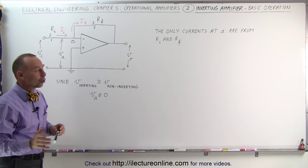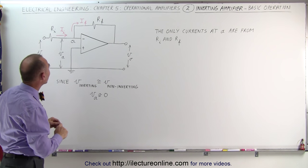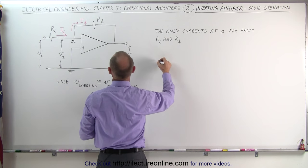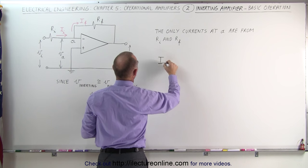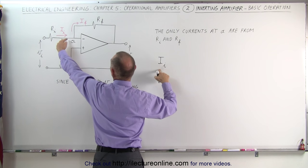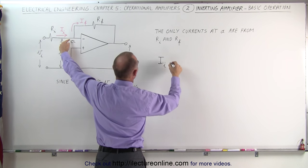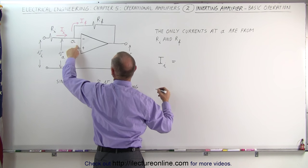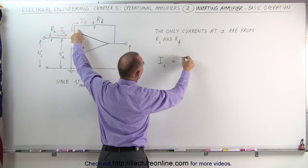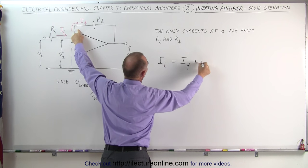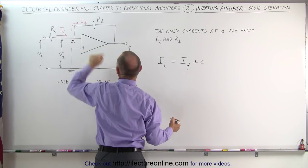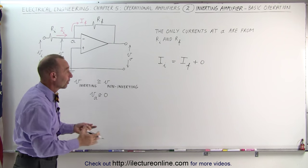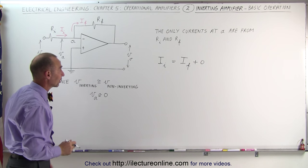Then using Kirchhoff's current rule at a junction, we can say that the current I sub I — the current on the input — must be equal to the sum of the currents leaving that junction, which equals I sub F plus zero, zero of course being the current to the non-inverting terminal. I included the plus zero so you can see I'm not forgetting about that third connection.